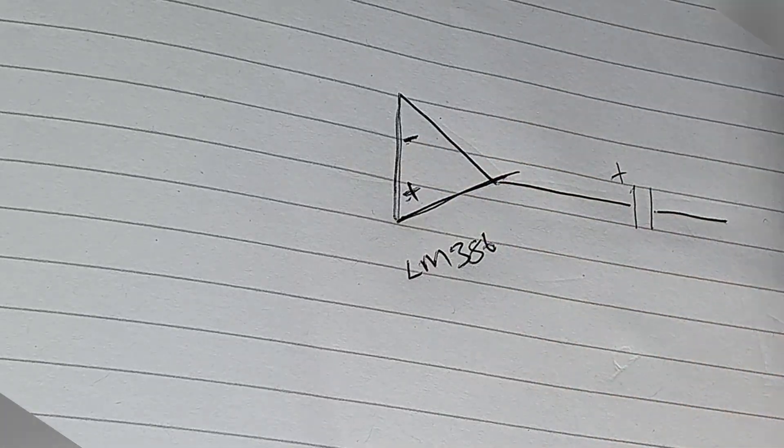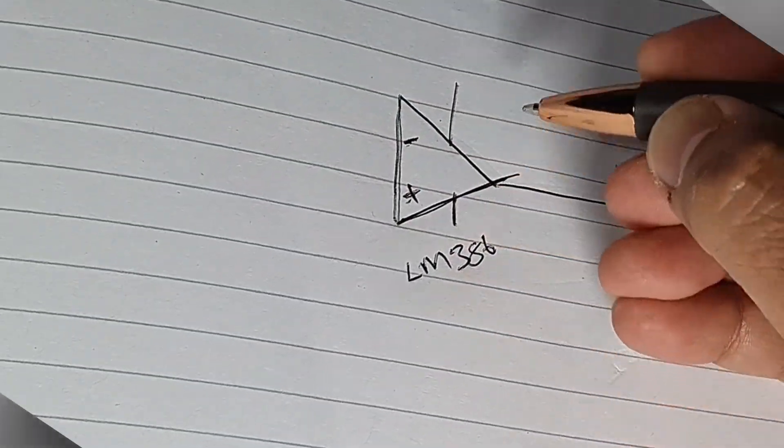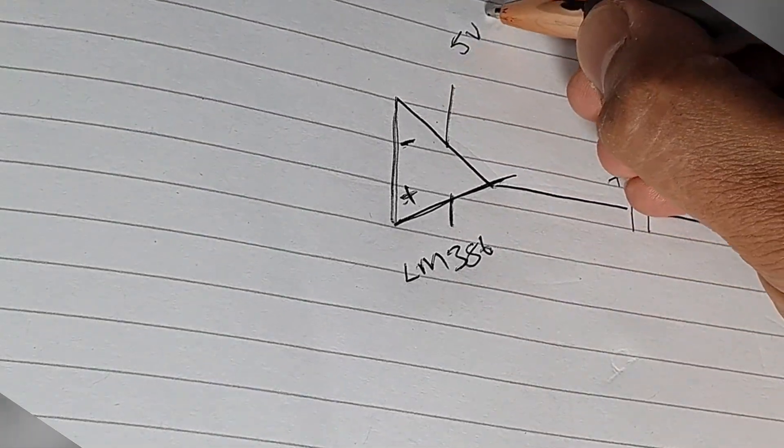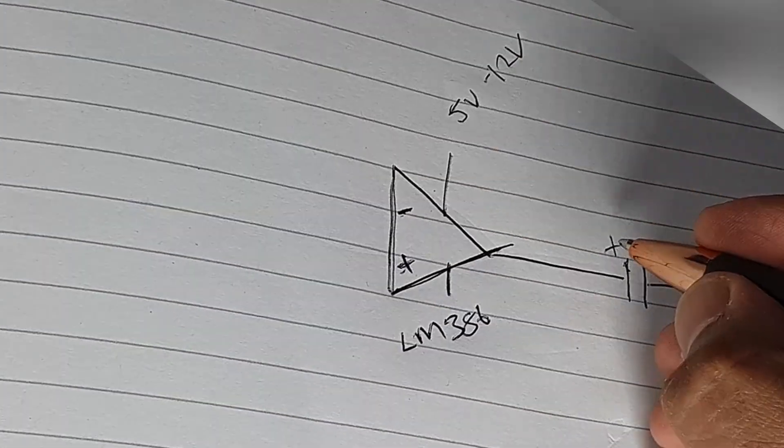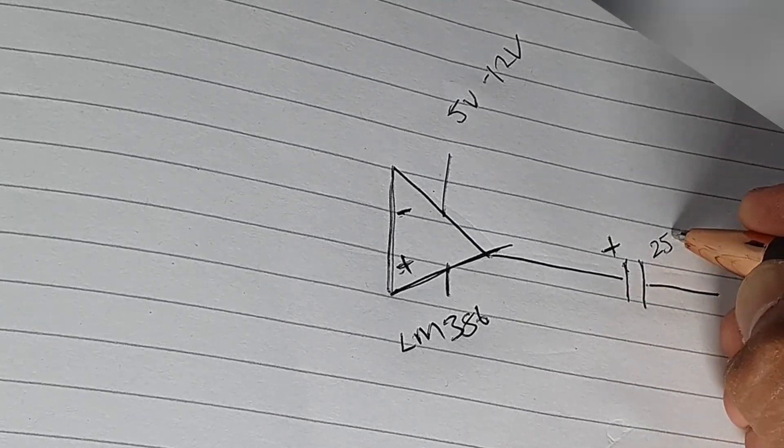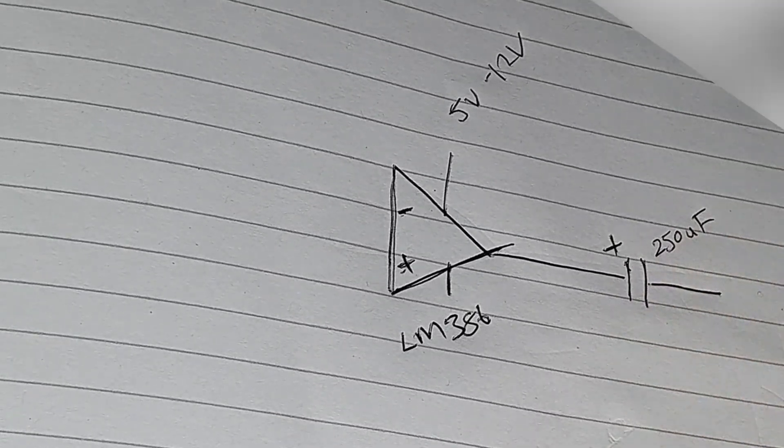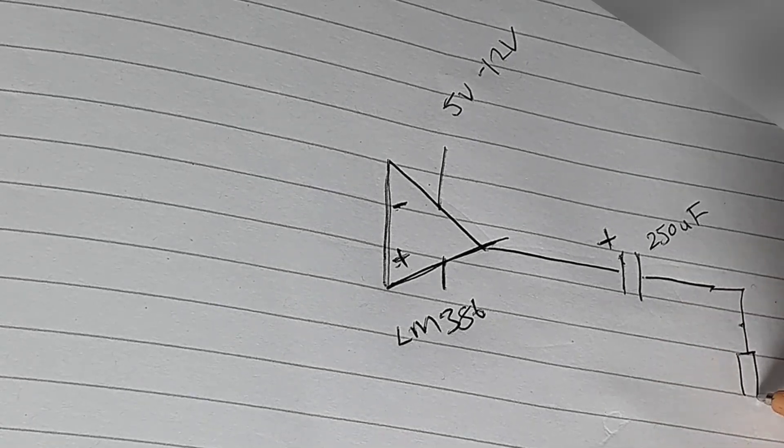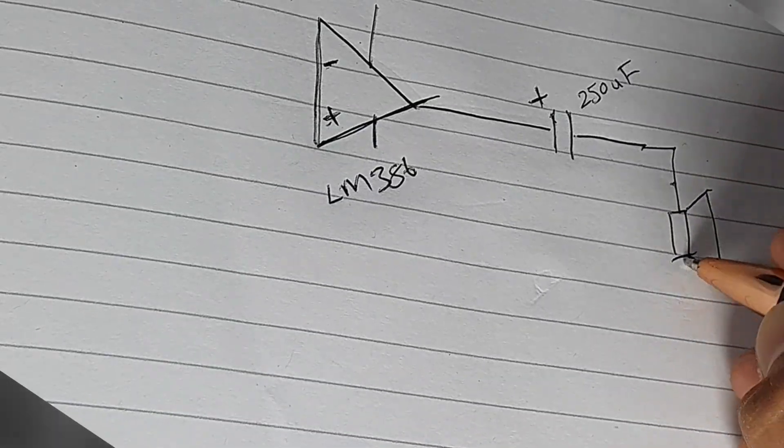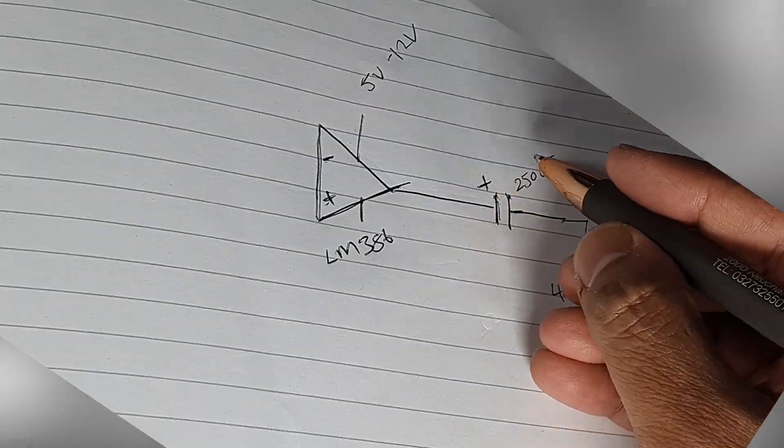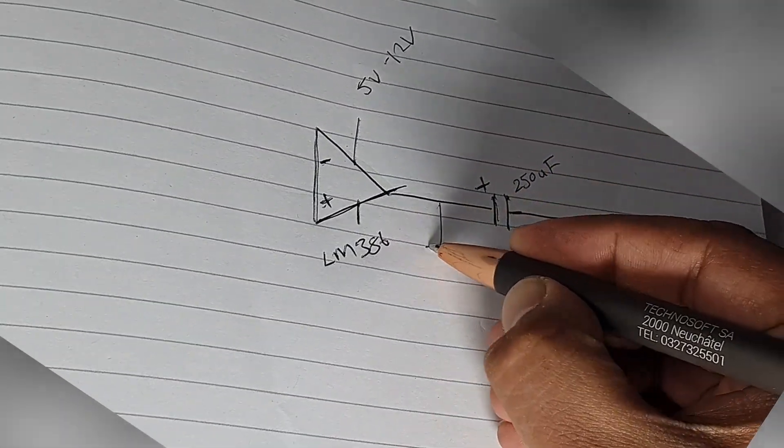Power supply rails can be from 5 volts to 12 volts. On the output we have a capacitor with a value of 250 microfarads. This then goes to the speaker, which in my case is 4 ohms.